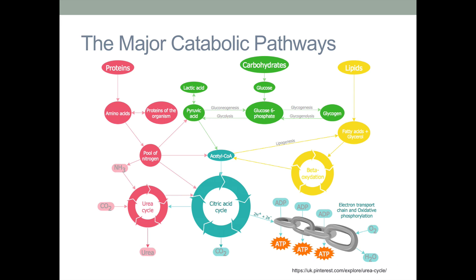For us, we'll be focusing on the major catabolic pathways — how do we eventually come to the electron transport chain and make lots and lots of ATP, lots of energy? Central to this is the citric acid cycle, or TCA cycle — tricarboxylic acid cycle — and a bunch of pathways where we take in our nutrients and feed into the TCA cycle.